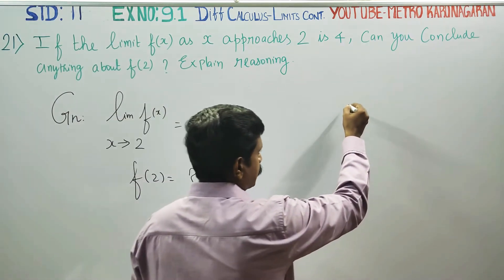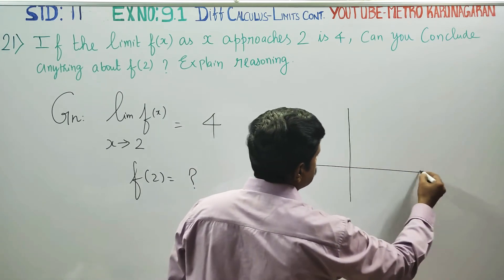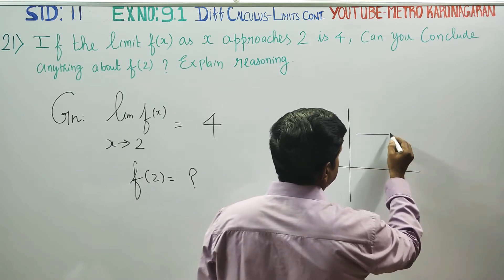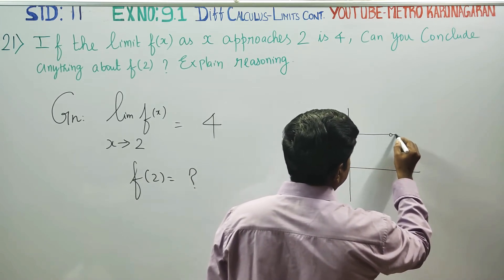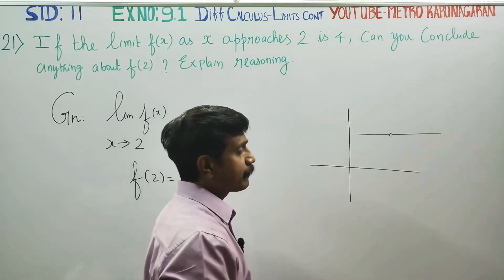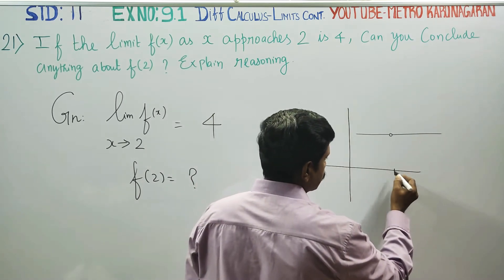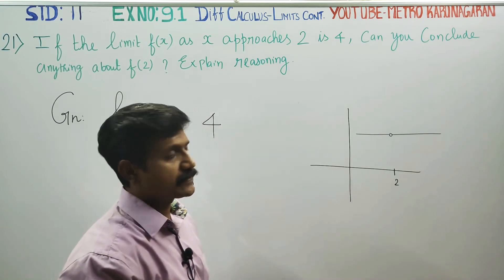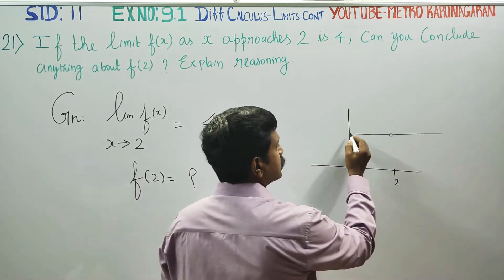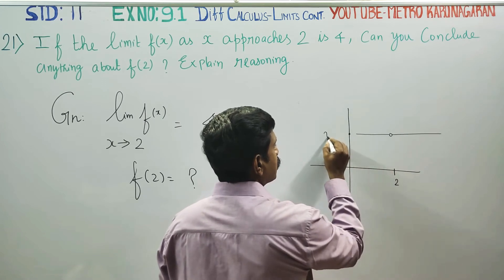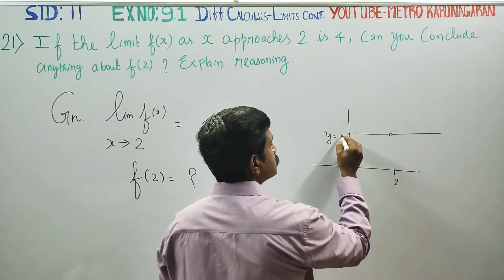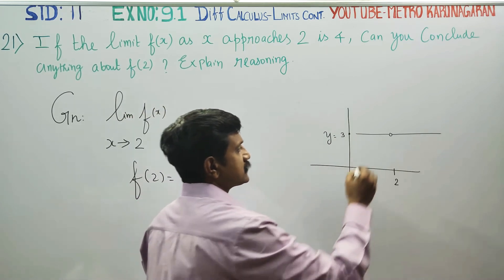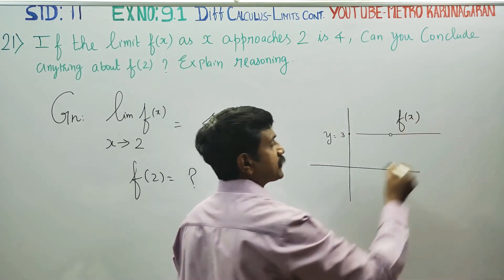A small example: take this line. The x-value is, for example, 2. At x = 2, this height y is equal to 3. This is my function.